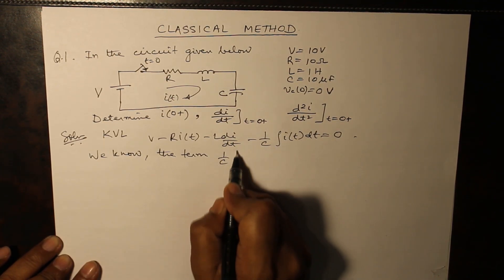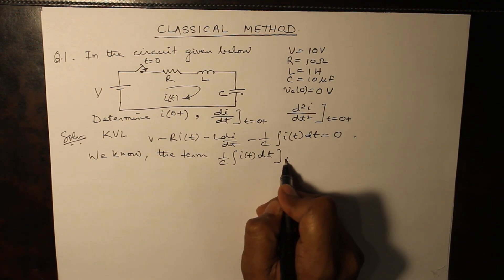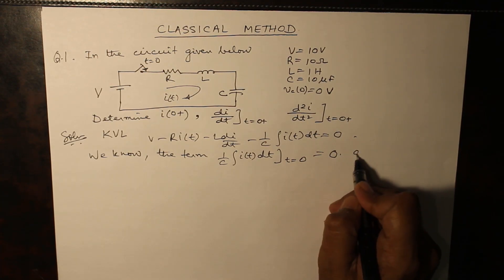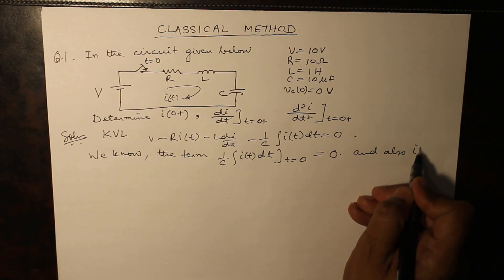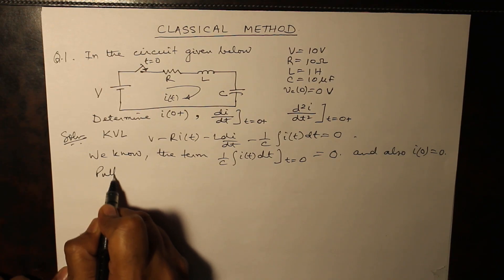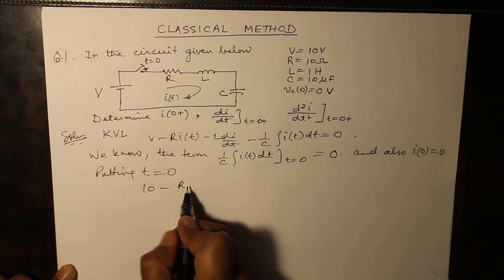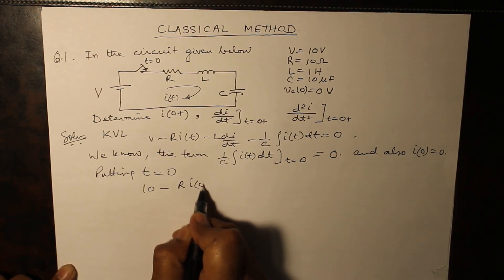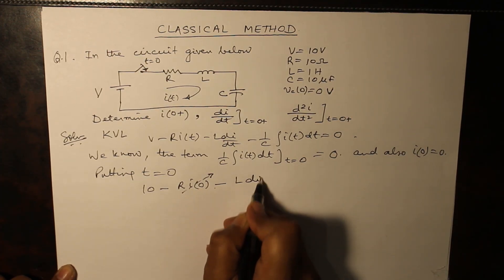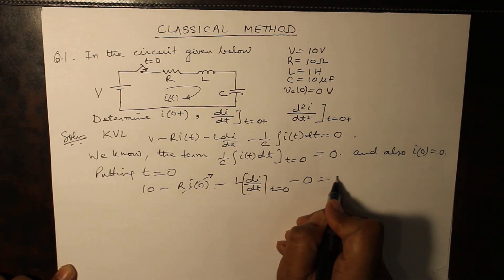The term (1/C)∫i(t)dt at t=0 is zero. Also i(0) is zero. Putting t=0: minus R times i(0), which will be zero, minus L times di/dt at t=0, minus zero, is equal to zero.